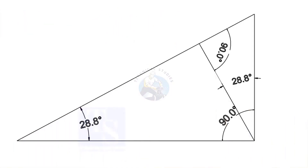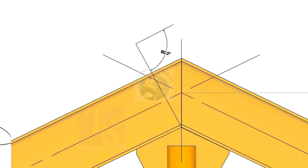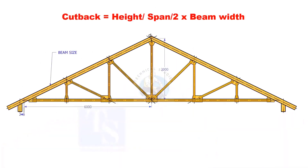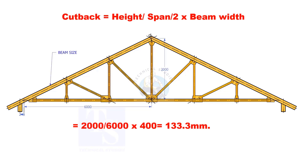Basically, the formula is based on the theory that opposite angles are equal. The cutback is truss height divided by half span, multiplied by the actual width of the girder.